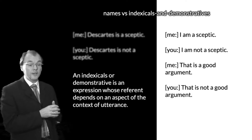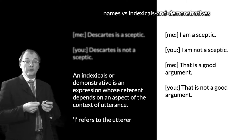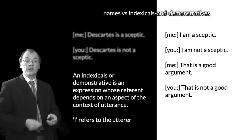For example, 'I' — here's the rule: 'I' refers to the utterer. That's the kind of rule that takes us from the context of utterance to an understanding of what it is that has been talked about.